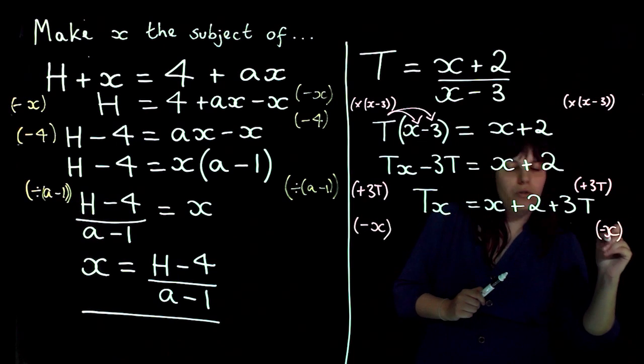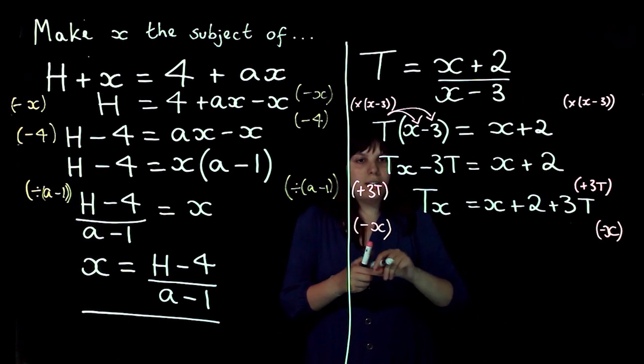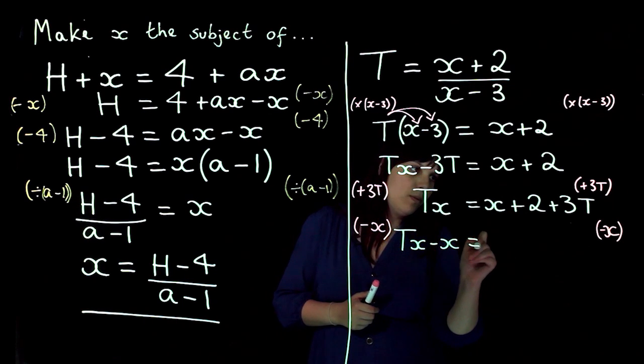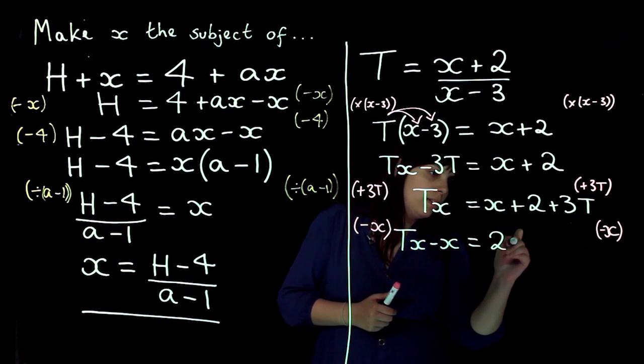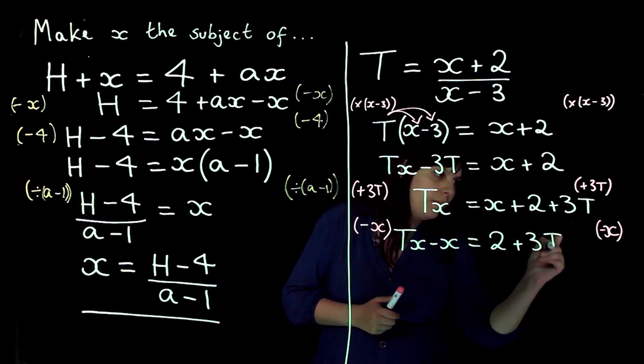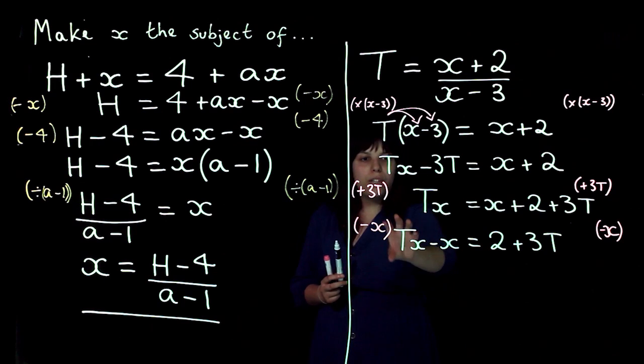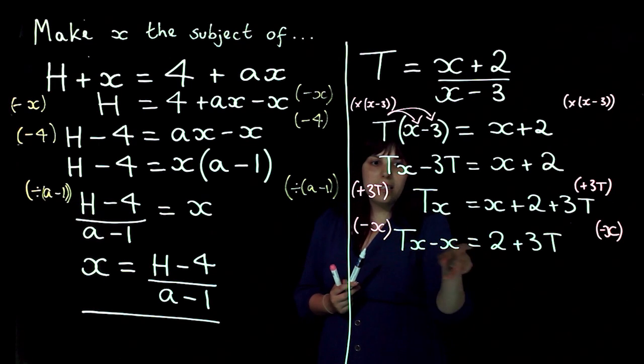So subtract x. So on this side I'm going to have tx minus x equals 2 plus 3t. Now if I look at tx minus x I can see that in both terms, there's a common x.